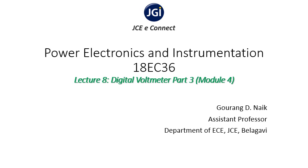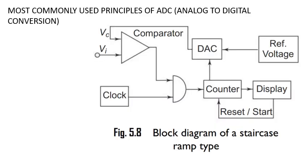In this video we are going to continue our discussion about digital voltmeters. The first topic is the most commonly used principles of ADC, where ADC stands for analog to digital converter. If it is hardware, it is called a converter. In your textbook, see figure 5.8 — this is what is used to convert analog values to digital values.